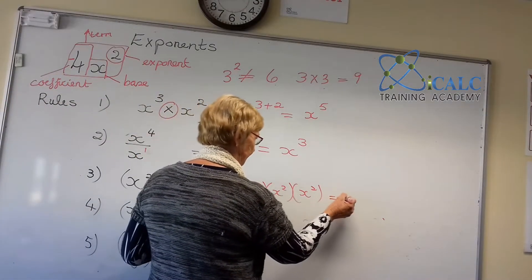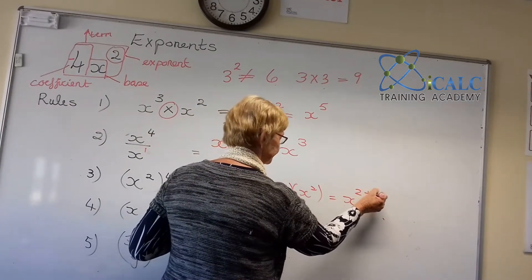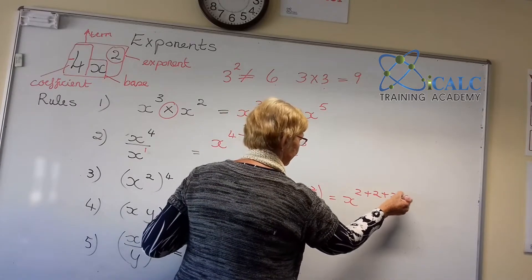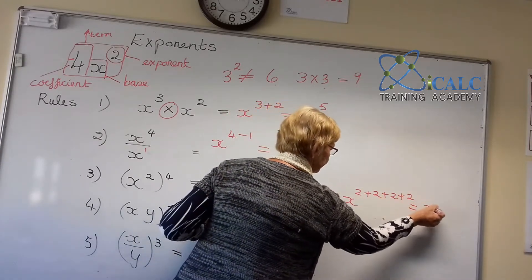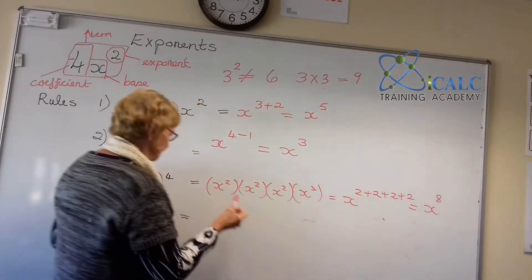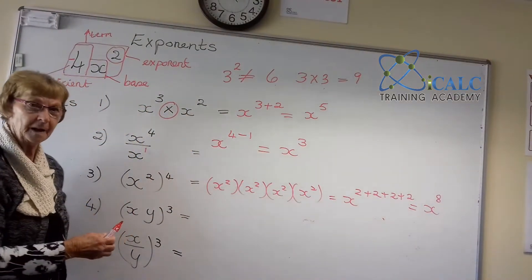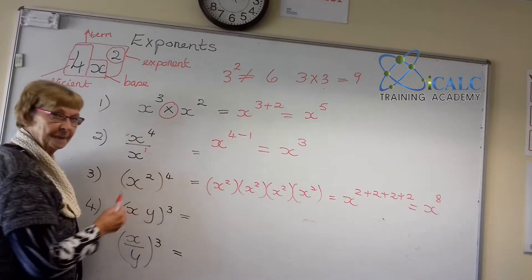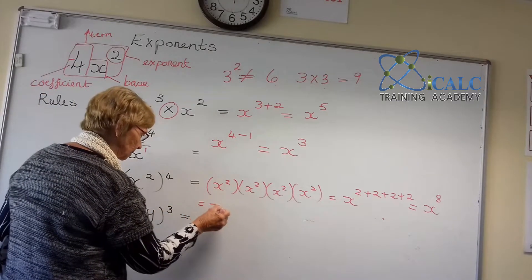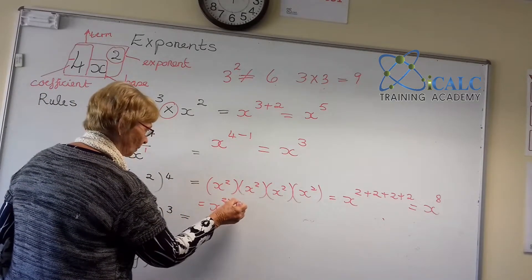We are now going to say this becomes x 2 plus 2 plus 2 plus 2, which will give you x to the power of 8. So when we raise a power to a power, we actually multiply the indices. So this then becomes x to the power of 2 times 4, which gives you x to the power of 8.